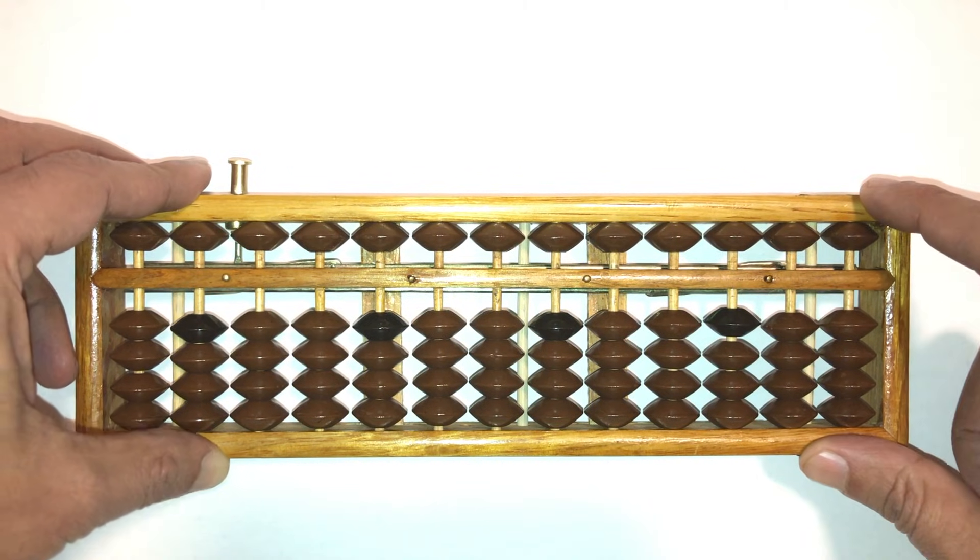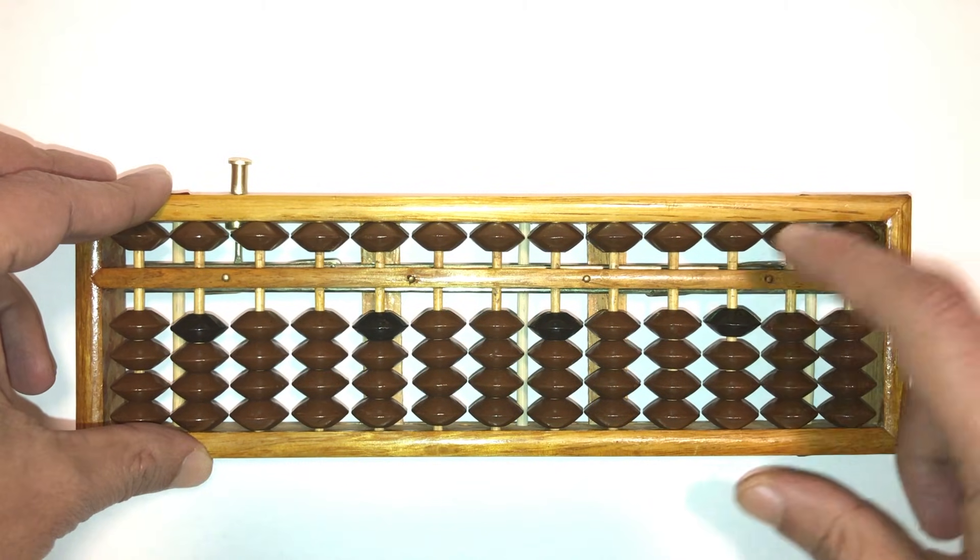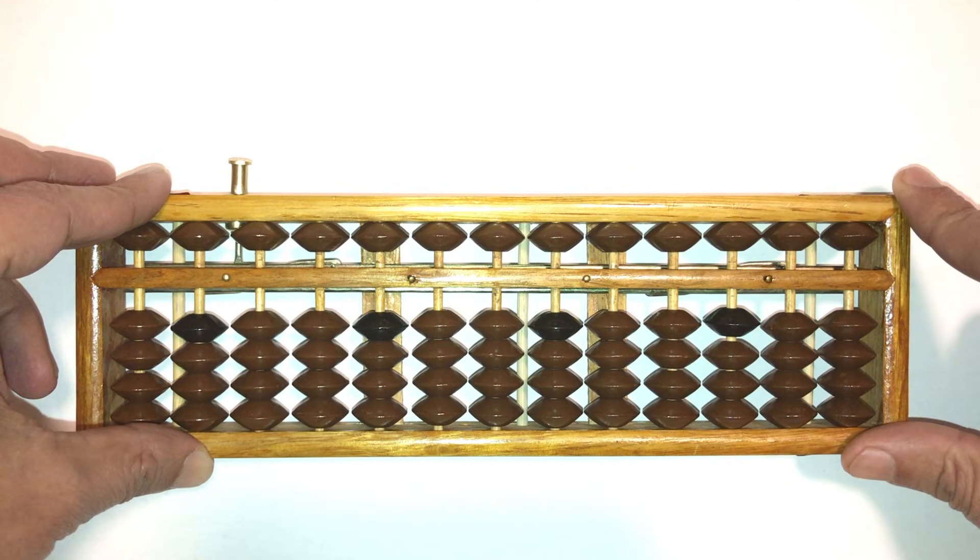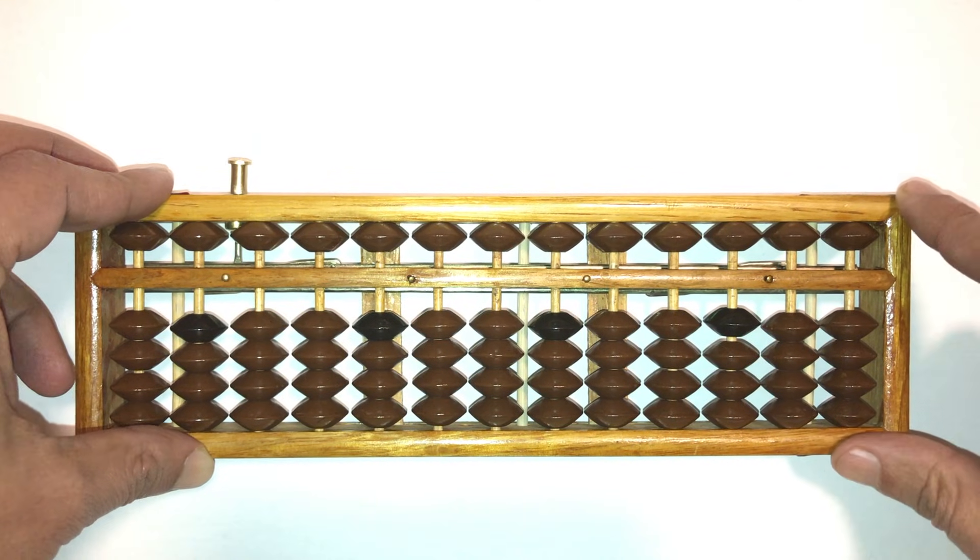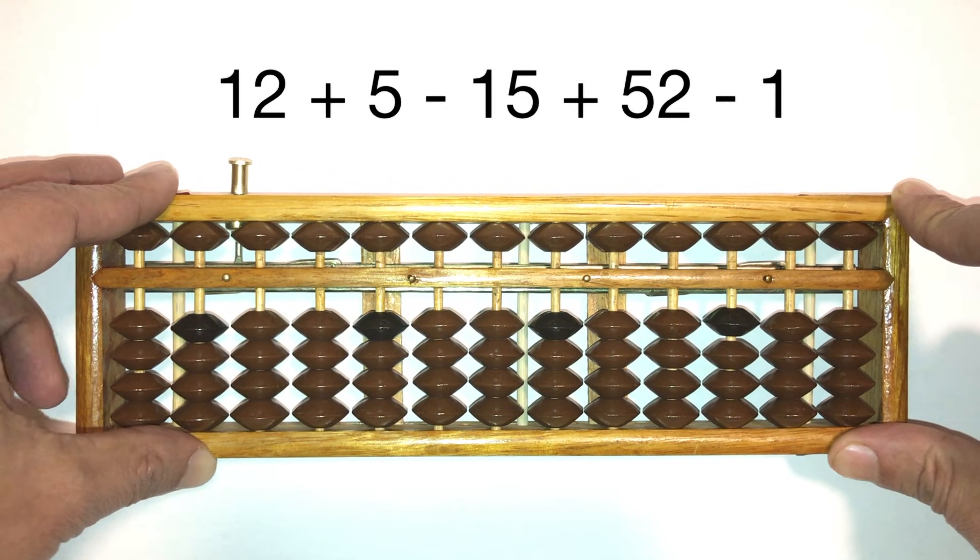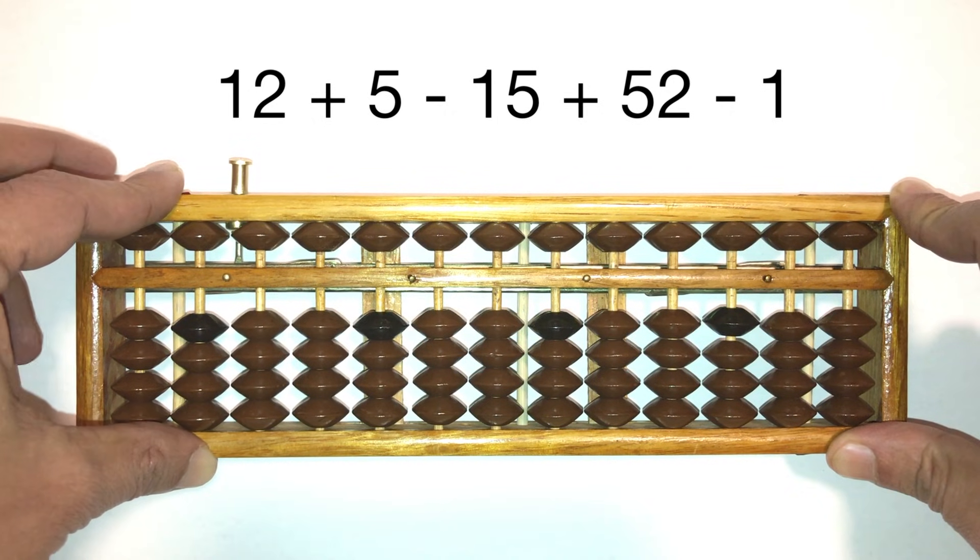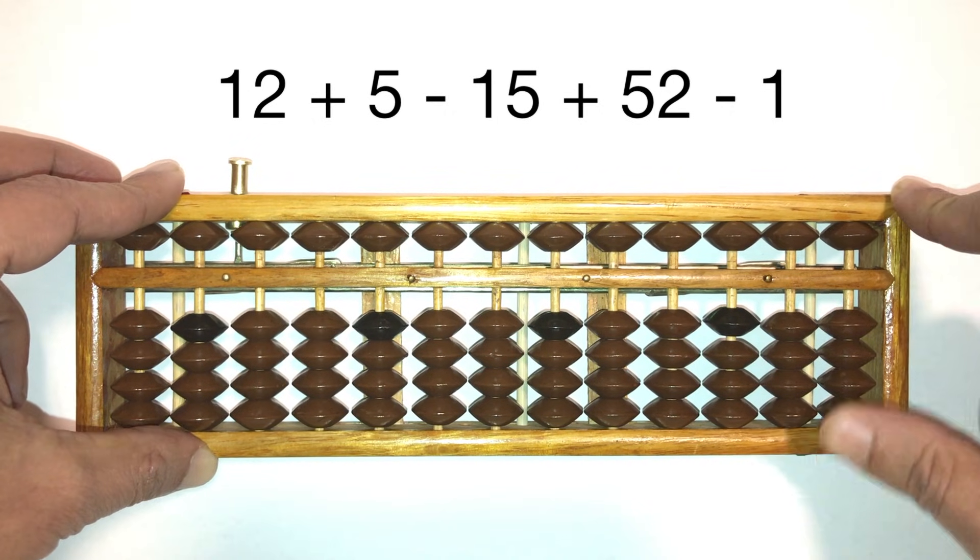Now we can't leave here without solving at least some questions with two-digit numbers. So let's do this here. Let's do 12 plus 5 minus 15 plus 52 minus 1. Here we go.